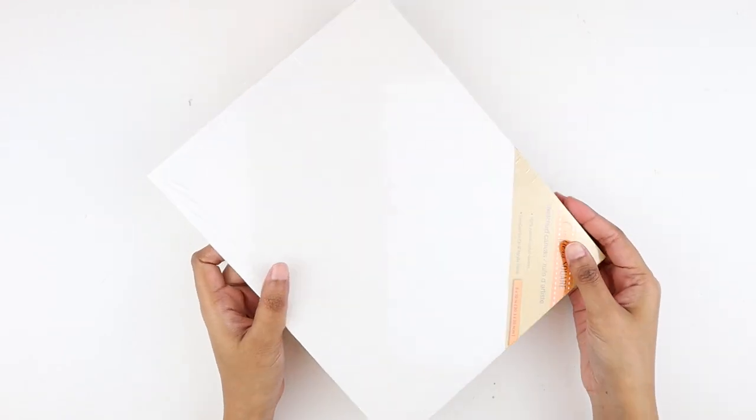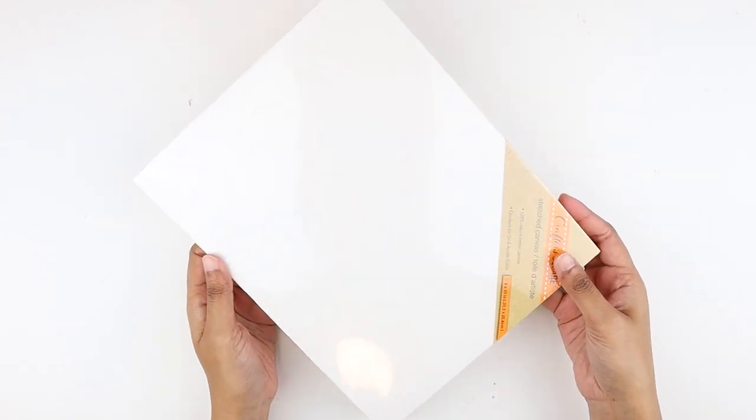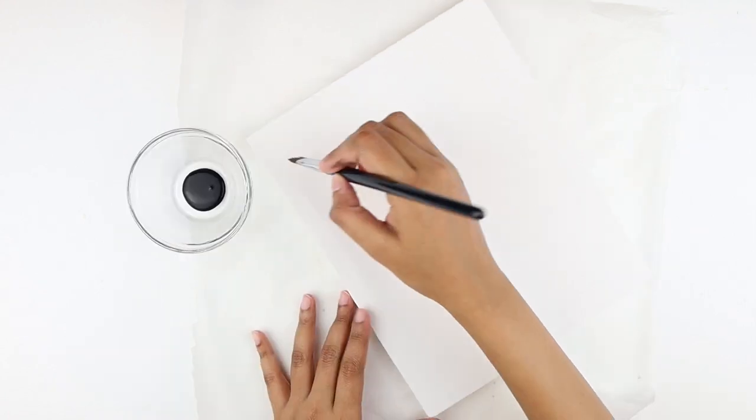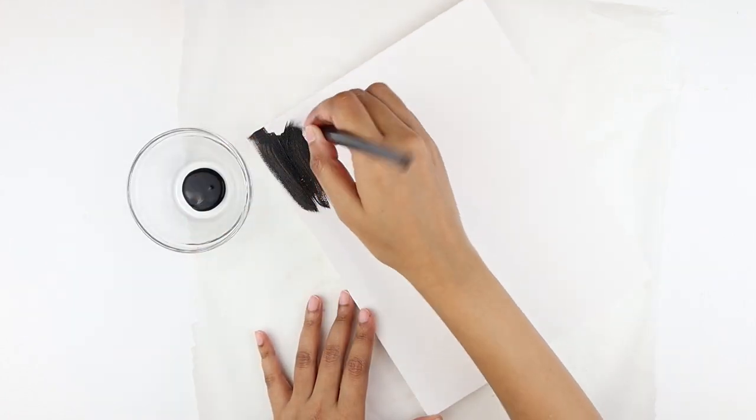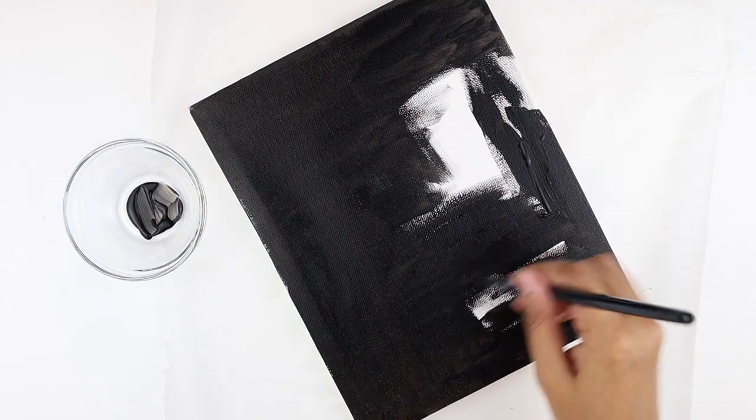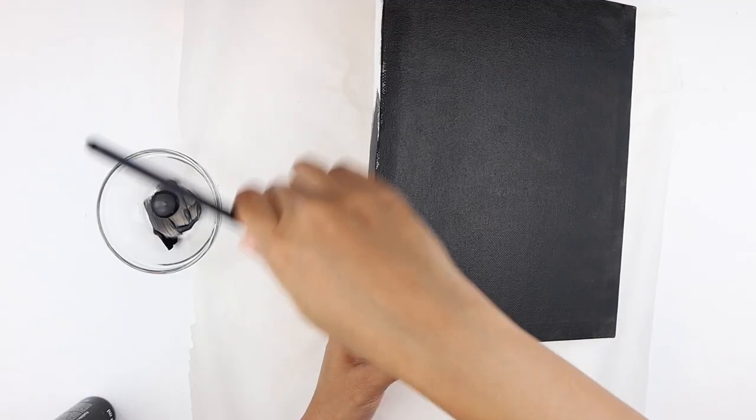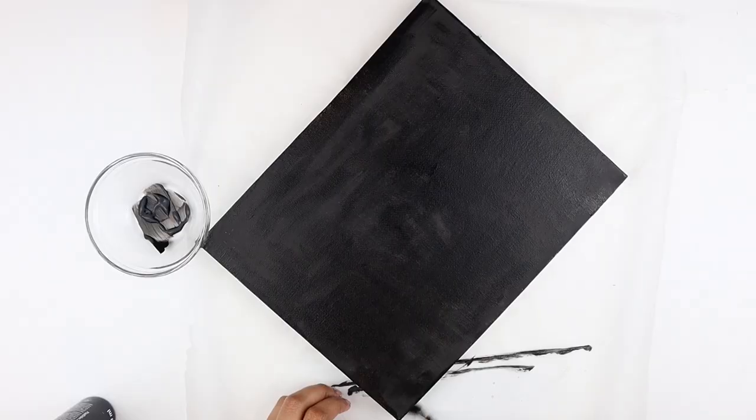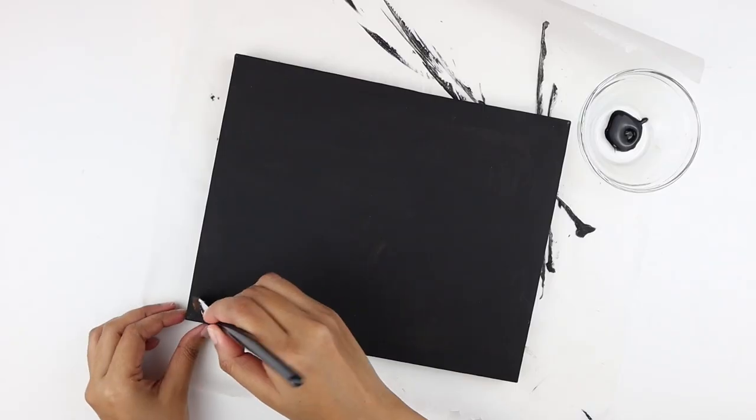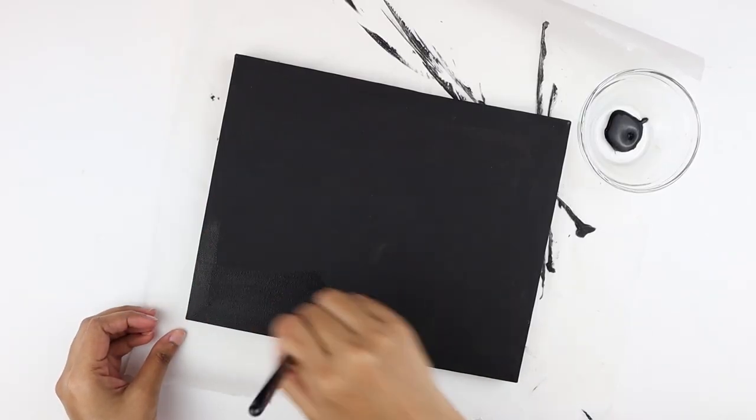For the next DIY project, I grabbed this 8x10 canvas. I took my acrylic paint and painted the entire canvas black. I also went ahead and painted the sides of it. After the first coat dried, I applied a second layer of paint.